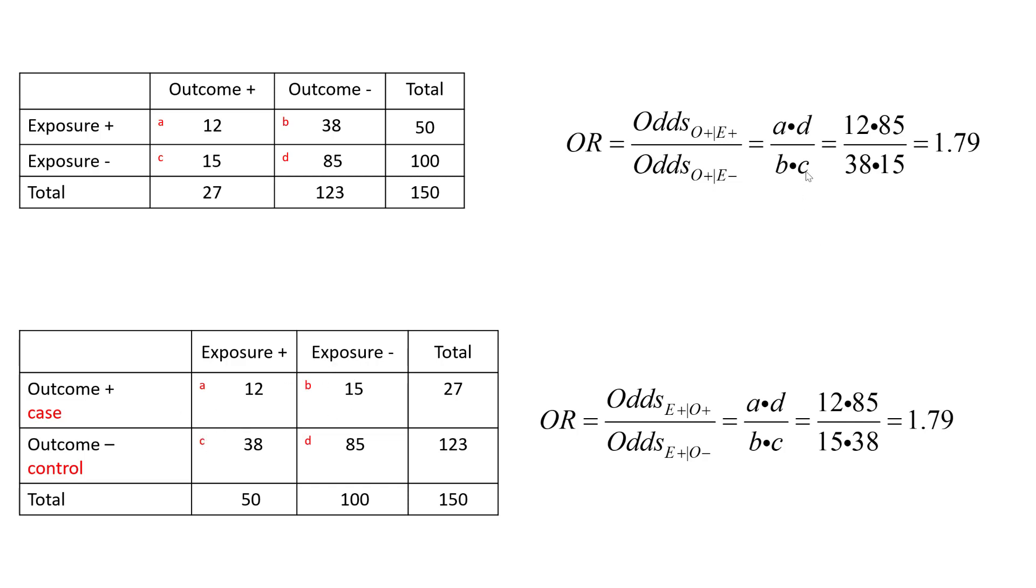Looking at the cross multiplication, this has no effect on the odds ratio. It only applies to the denominators and makes no difference in the final number. In one we have 38 times 15, and in the other we have 15 times 38—no difference.